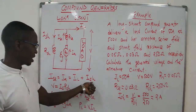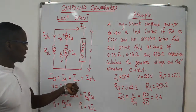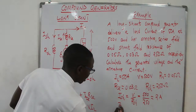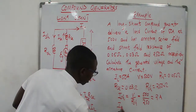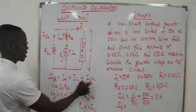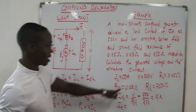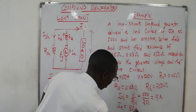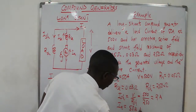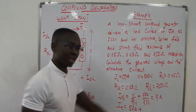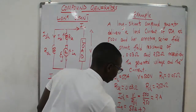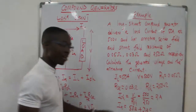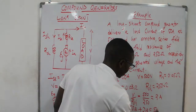Since we now have the shunt current and the load current, we can find the armature current. The armature current is the summation of the load current — 50 amps — plus the shunt current of 2 amps, giving an armature current of 52 amps.